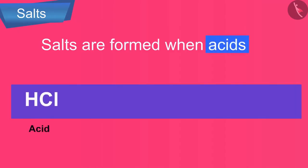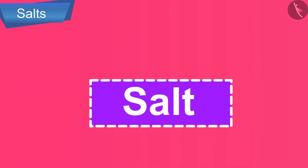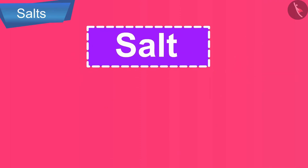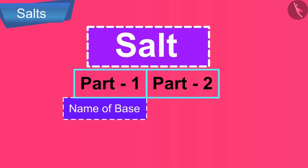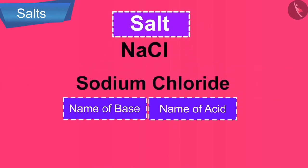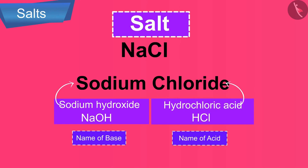Salts are formed when acids react with bases. We can say that a salt has two parents: an acid and a base. The name of a salt consists of two parts — the first part is derived from the name of the base, and the second part comes from the name of the acid. For example, sodium chloride: sodium comes from sodium hydroxide (a base), and chloride comes from hydrochloric acid.